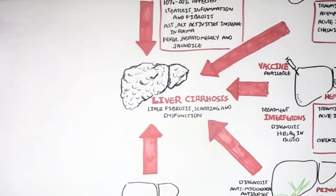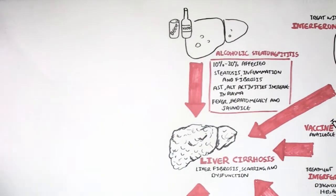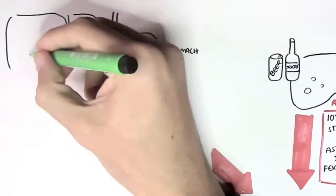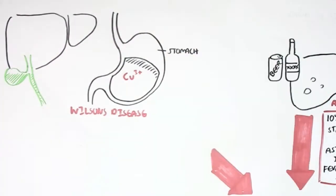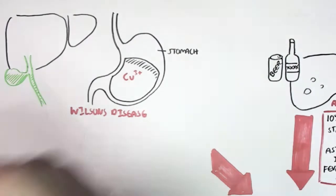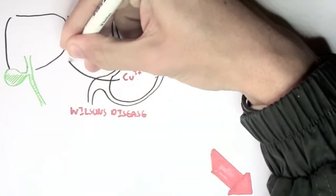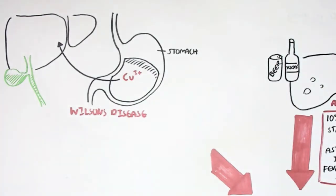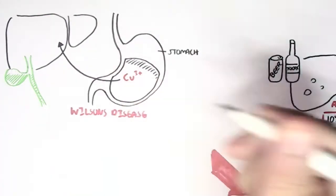Another cause of liver cirrhosis is an inherited disease known as Wilson's disease. Normally we would absorb copper from the stomach. The copper will come into the liver and then be secreted via the bile and basically eliminated if necessary or will move around the body.